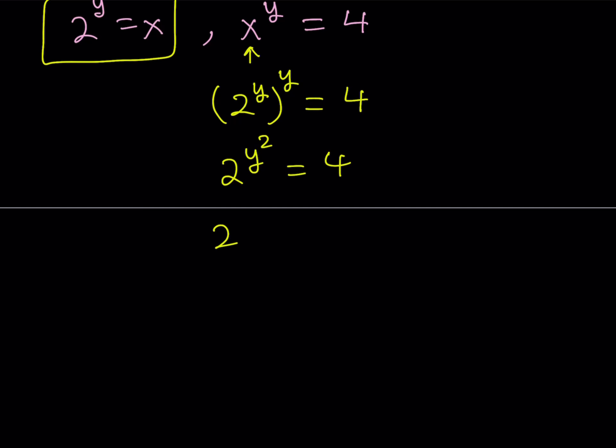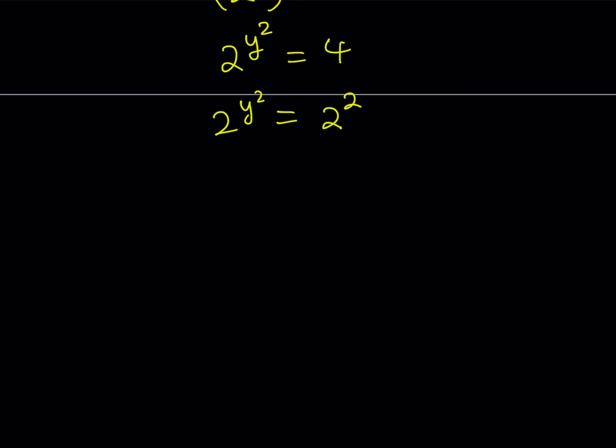And then 4 can be written as 2 to the power 2. This means that if the bases are equal, exponents must be equal. So, y squared equals 2 is going to give us the y values. And from here, we're getting y equals root 2 or y equals negative root 2.